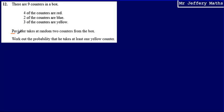Concentrating on the scenario where Pervinda takes two counters at random — this is exactly the same as if Pervinda took one counter from the box, and then without putting it back, chose another one. So choosing a counter and not replacing it, then choosing another, is exactly the same as picking up two counters at the same time.